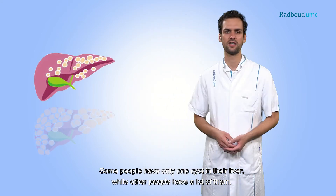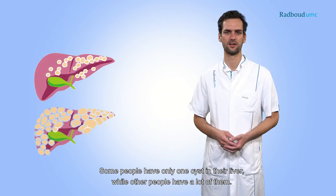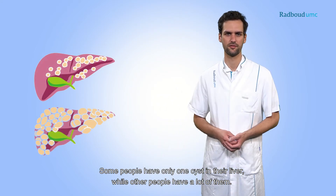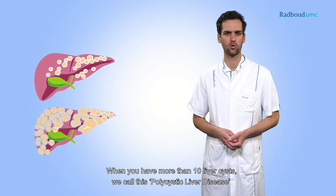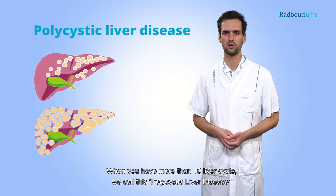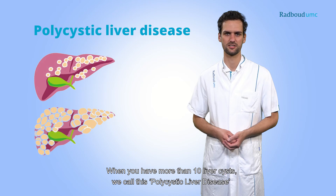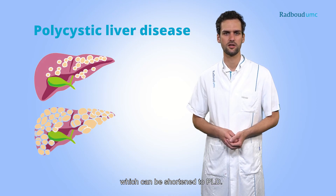Some people only have one cyst in their liver, while others have a lot of them. When you have more than 10 liver cysts, we call this polycystic liver disease, which can be shortened to PLD.